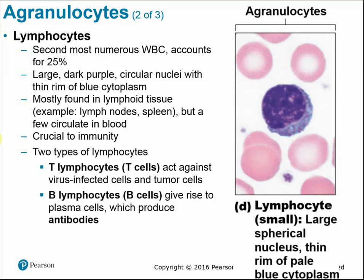Lymphocytes are probably the most crucial cells of the immune system — we'll cover them in depth in the immune chapter. There are two types: T cells, which act against virus-infected cells, tumor cells, and intracellular parasites; and B cells (B lymphocytes), which form plasma cells that produce antibodies to attack antigens on the surface of cells.